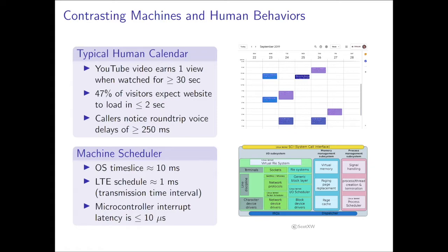Let's compare some of the characteristics between humans and machines. A YouTube video earns one view when it's watched for more than 30 seconds. Users on the internet expect web pages to load in less than 2 seconds. And the quality of a voice call will be deemed inadequate if the delay is greater than 250 milliseconds. Machines, on the other hand, work on a different time scale. An operating system time slice is about 10 milliseconds, the transmission time for LTE is on the order of 1 millisecond, and a microcontroller interrupt has a latency of 10 microseconds — quite a contrast with a human connection.